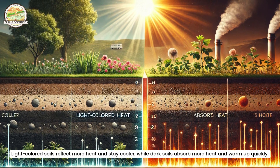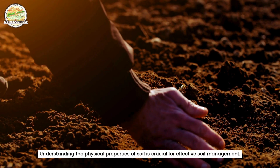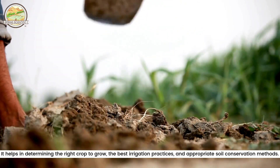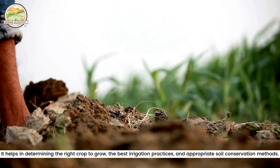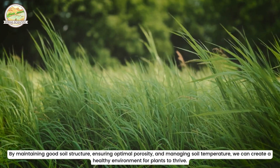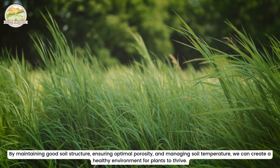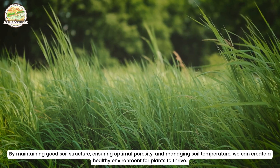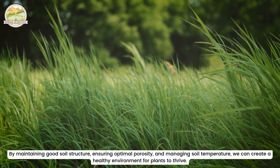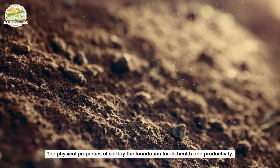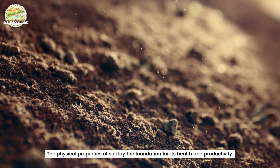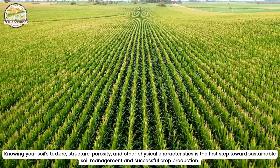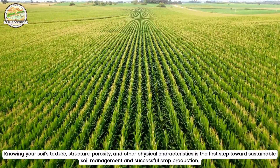Understanding the physical properties of soil is crucial for effective soil management. It helps in determining the right crop to grow, the best irrigation practices and appropriate soil conservation methods. By maintaining good soil structure, ensuring optimal porosity and managing soil temperature, we can create a healthy environment for plants to thrive. Knowing your soil texture, structure, porosity and other physical characteristics is the first step towards sustainable soil management and successful crop production.